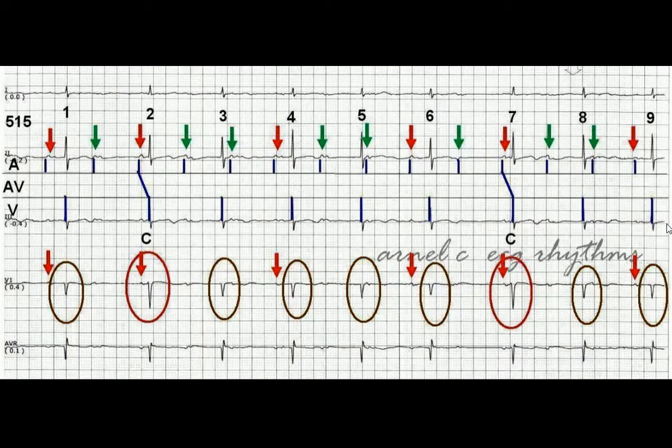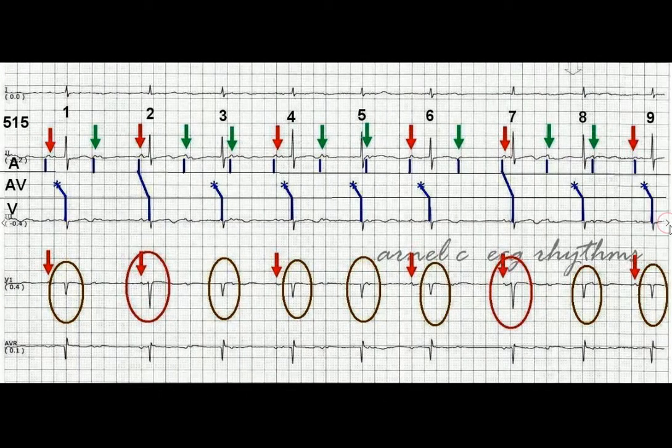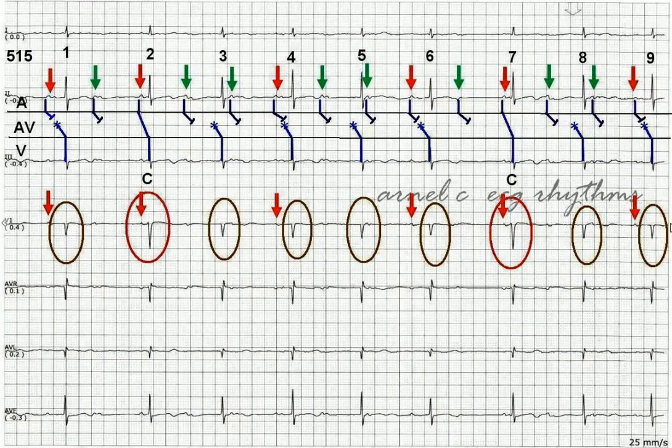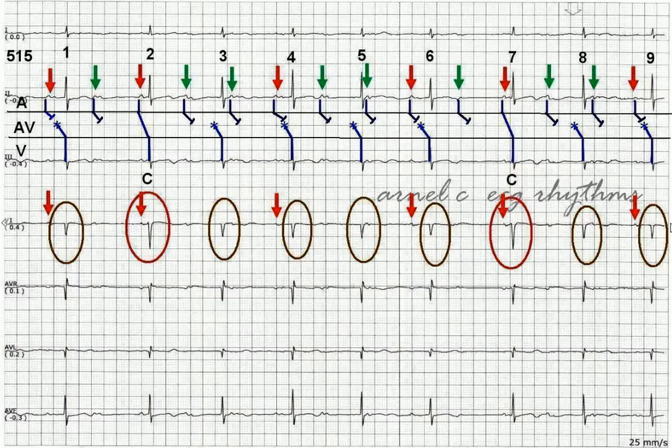Now, let's connect the A tier. QRS 2 and QRS 7 are captured beats, or sinus beats that were able to conduct through the AV node. QRS 1, 3, 4, 5, 6, 8, and 9 are from the junction. Now, here is the completed ladder diagram. The rest of the P waves are not conducted.